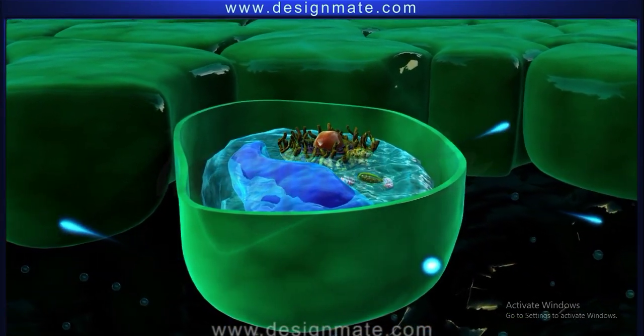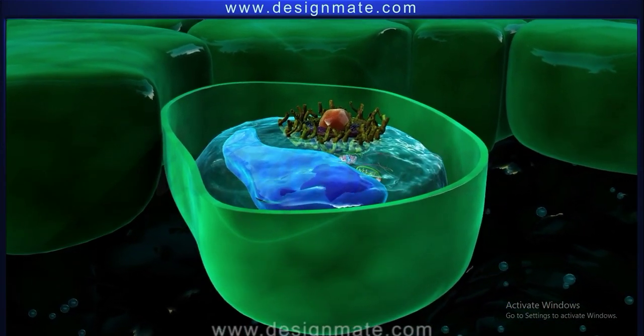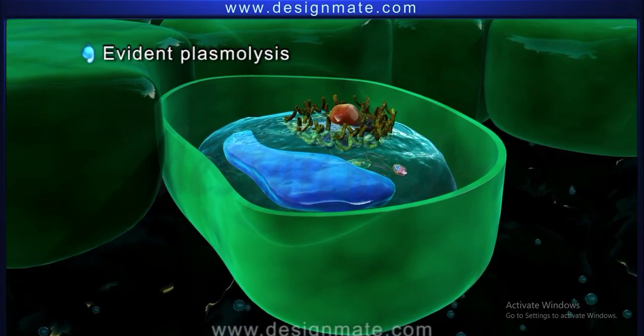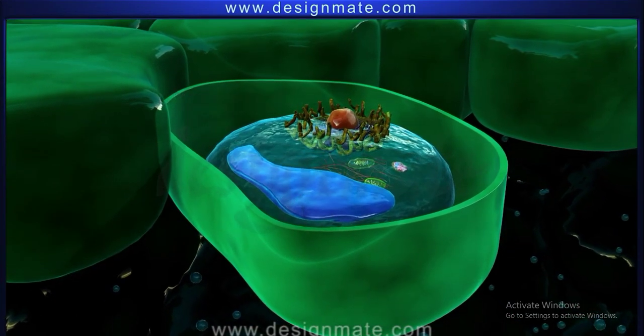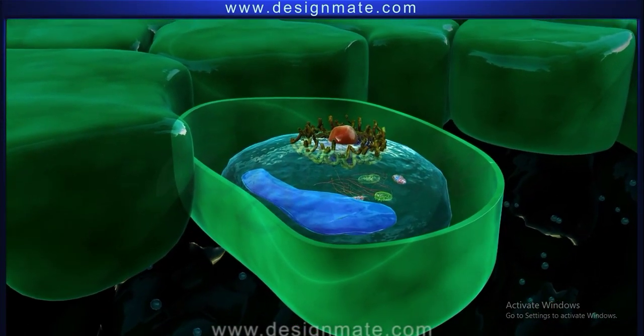Further shrinkage of cytoplasm continues till it appears somewhat spherical. This stage is called evident plasmolysis. At this point, the vacuole gets deflated and the cell membrane moves away from the cell wall. Such a cell is said to be flaccid.